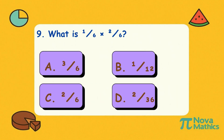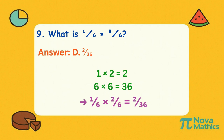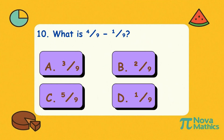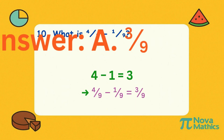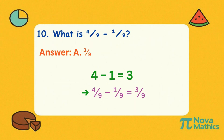Nine. What is one-sixth times two-sixths? Multiply the tops: one times two is two. Multiply the bottoms: six times six is thirty-six. So it's two-over-thirty-six. Ten. What is four-ninths minus one-ninth? Four minus one is three on top. The bottom number stays nine. That's three-ninths.